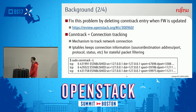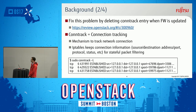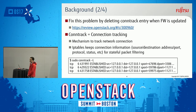So what is conntrack? Conntrack stands for connection tracking. Connection tracking is a mechanism to track network connections. IP tables keep connection information like source address, source port, destination address, destination port, protocol status, and so on — for stateful packet filtering. We can easily use the conntrack command to check the status of the conntrack entry. In the case of the previous example, when we delete the allow SSH rule, we have to delete the corresponding conntrack entry by using the conntrack command.